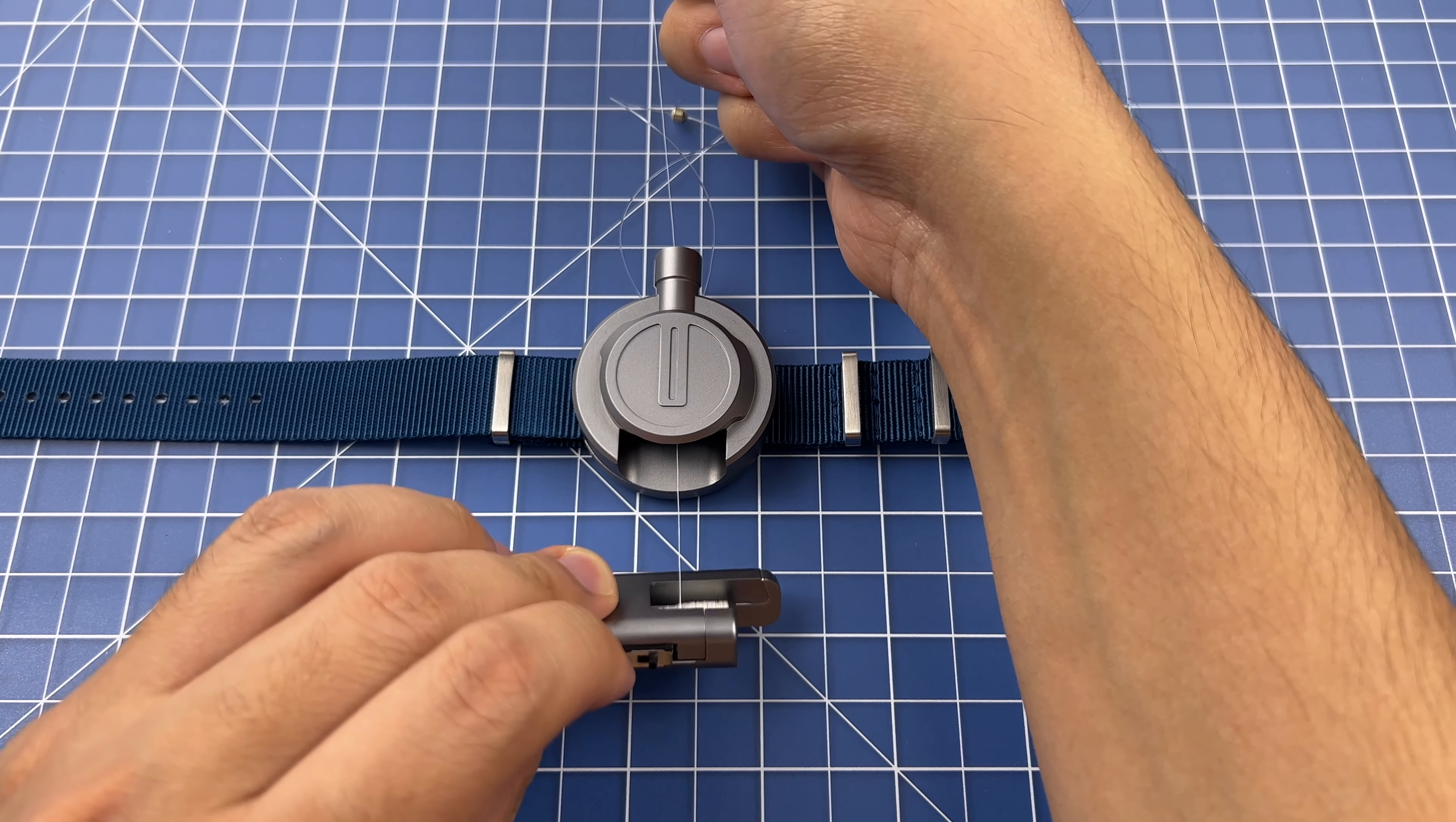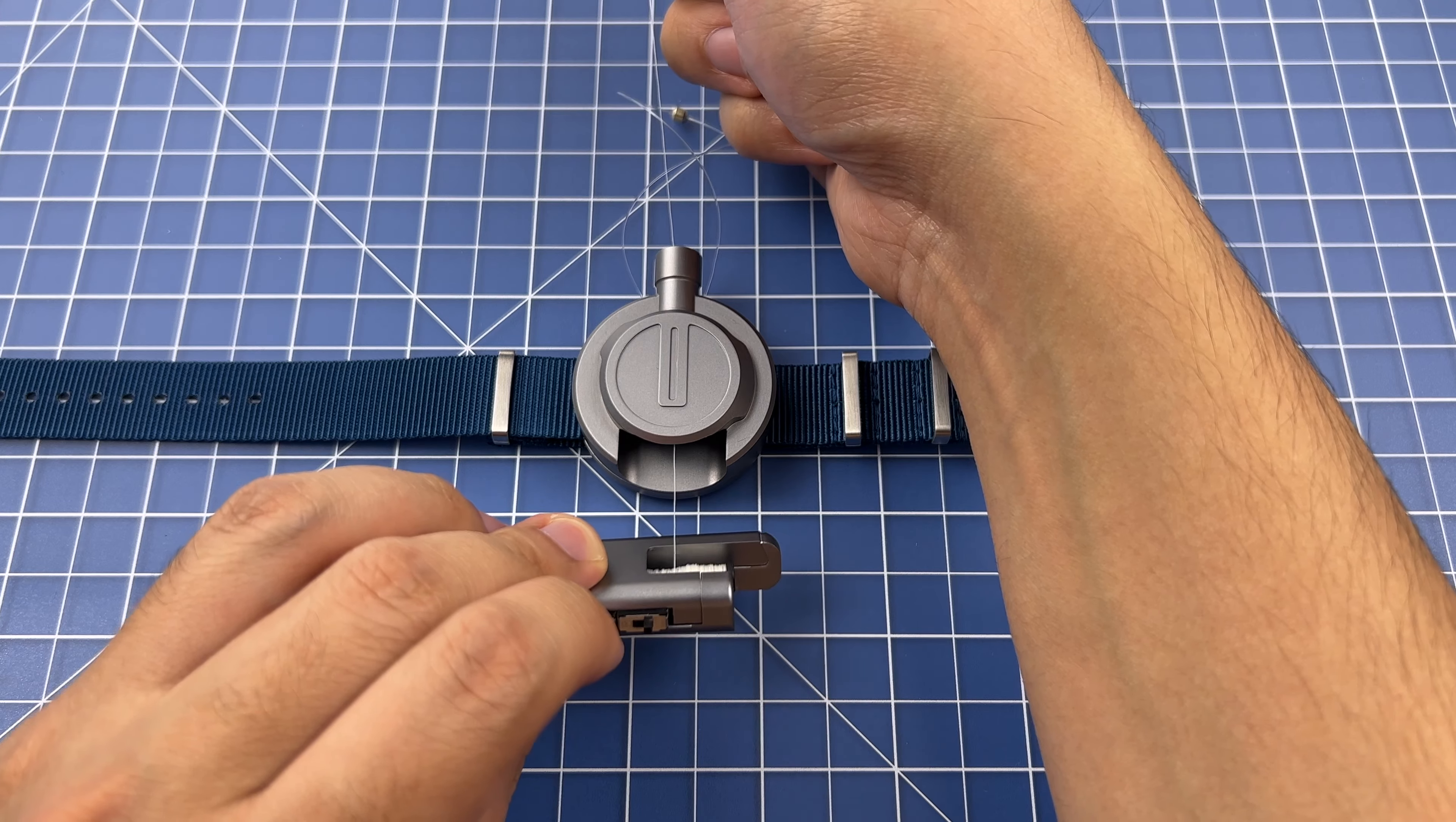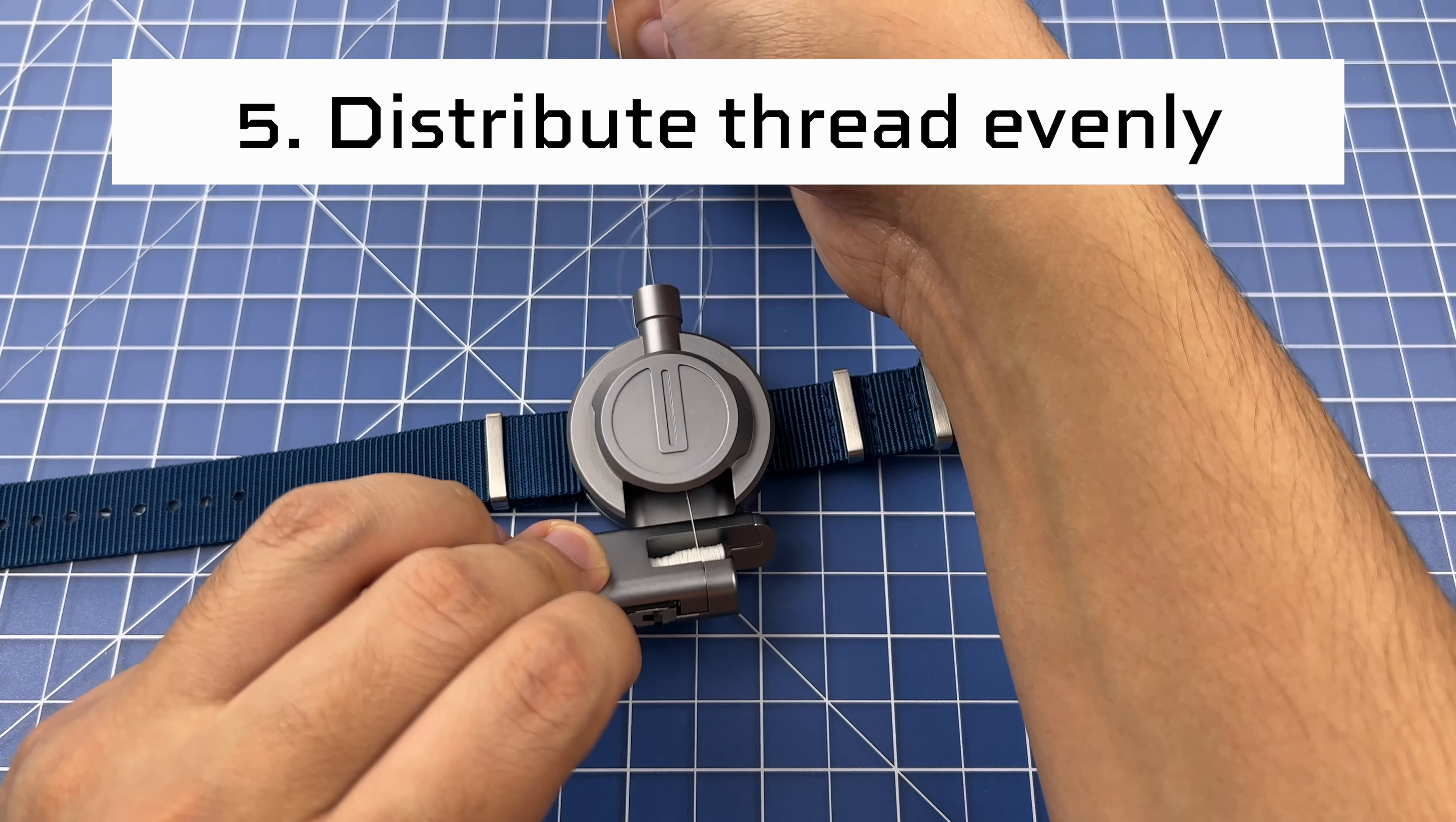As the thread loads onto the spool, you want to make sure that it's being distributed evenly. You don't want too much thread in any one particular spot on the spool.